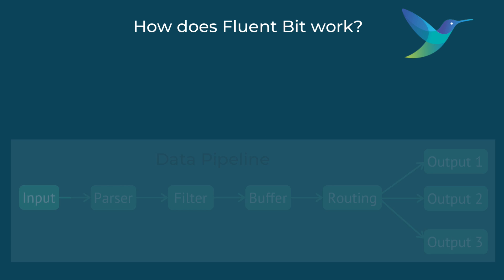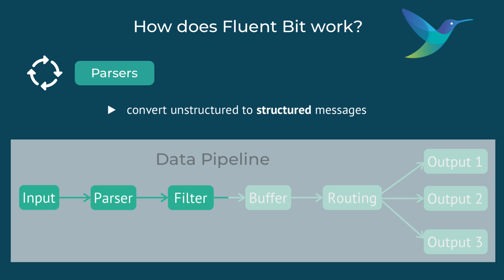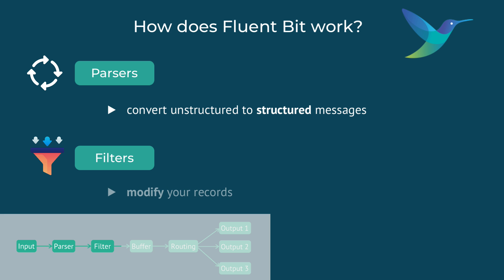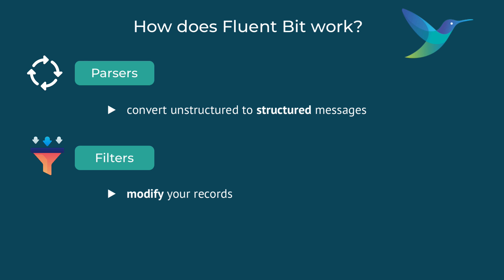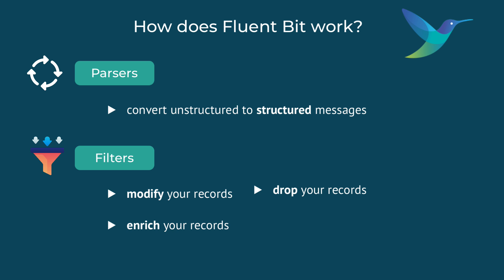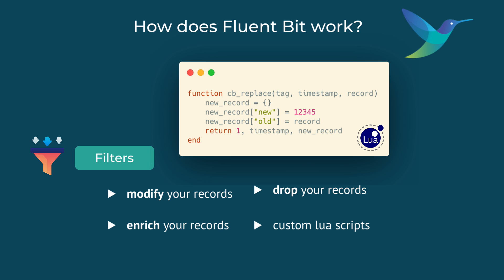Once logs are collected and read, FluentBit will process them. Depending on the log format, we need to parse them differently. For that, FluentBit has different filters and parsers. Filters can be used to change the log record or add additional metadata to it, like pod ID or namespace where the log is coming from. You can also use filters to drop or ignore some records. To make filtering even more flexible, you can use custom Lua scripts as filters to modify and process the records.